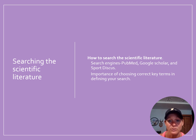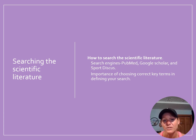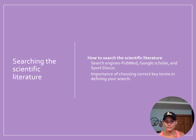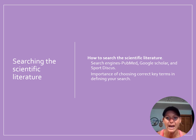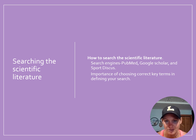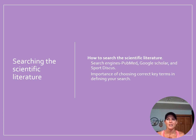For searching scientific literature, I would say the easiest thing is to use Google Scholar. You can also use PubMed and Sport Discus. Sport Discus is nice because it's focused on journals specific to coaching. Google Scholar and PubMed are more general. It's really important to choose the correct key terms when defining your searches so that you get quality results back.